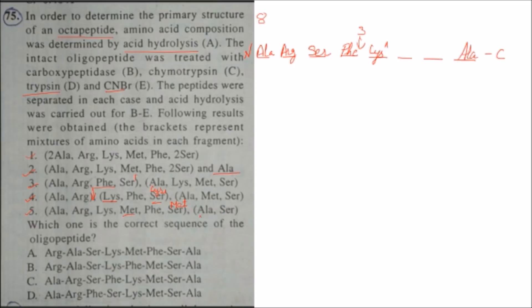So what sequence are we getting? Alanine and serine: here it will be alanine, and obviously serine will be here, and what we get here is methionine. So the final sequence of amino acids is: Alanine, Arginine, Serine, Phenylalanine, Lysine, Methionine, Serine, and Alanine. So the answer will be option C.